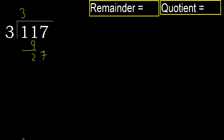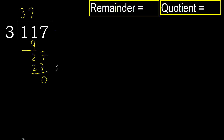27. 3 multiplied by 9 is 27 — 27 is not greater. Subtract 0, next.